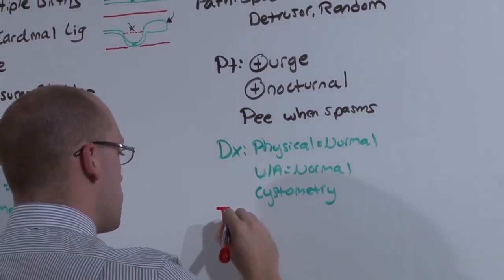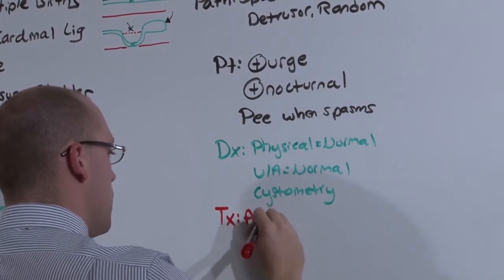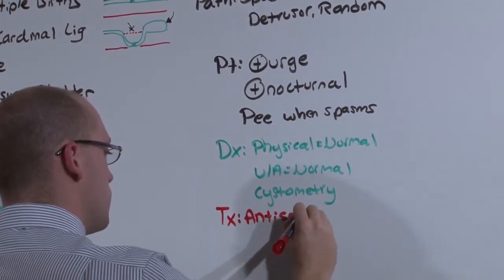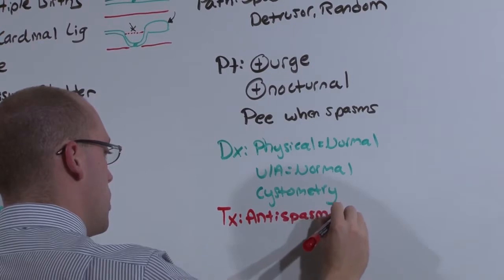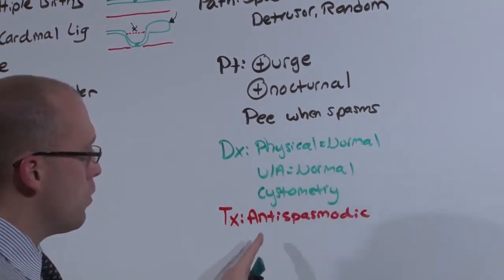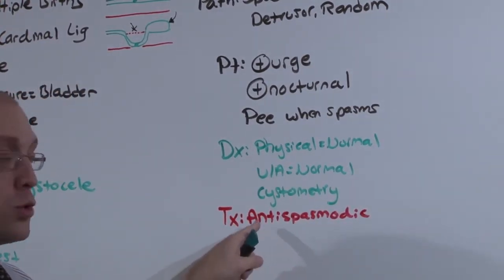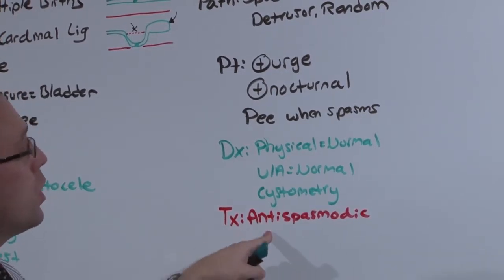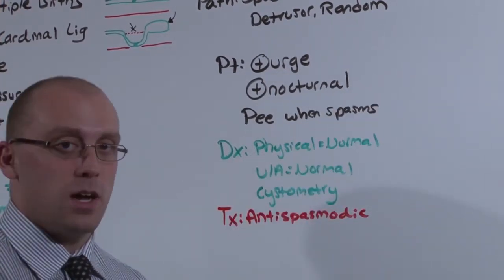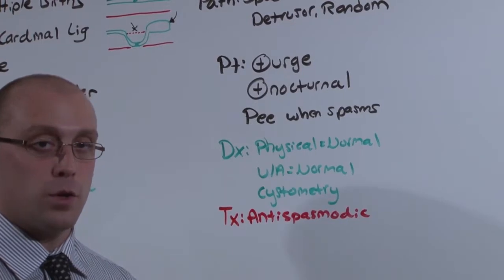Because it's caused by spastic bladder, give antispasmodic agents. Knowing that if you give too much antispasmodic medication, you will reduce the detrusor muscle to zero and cause the next kind of incontinence, hypotonic or overflow.